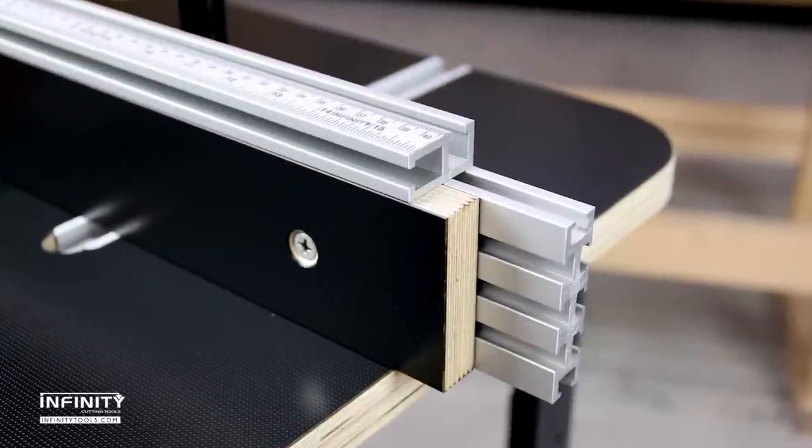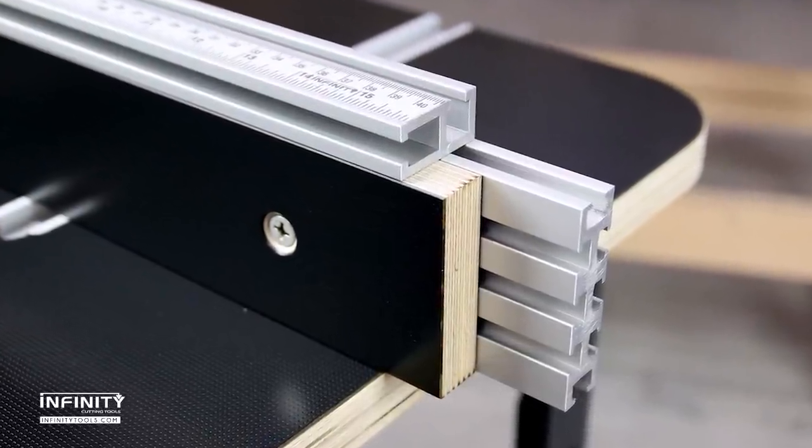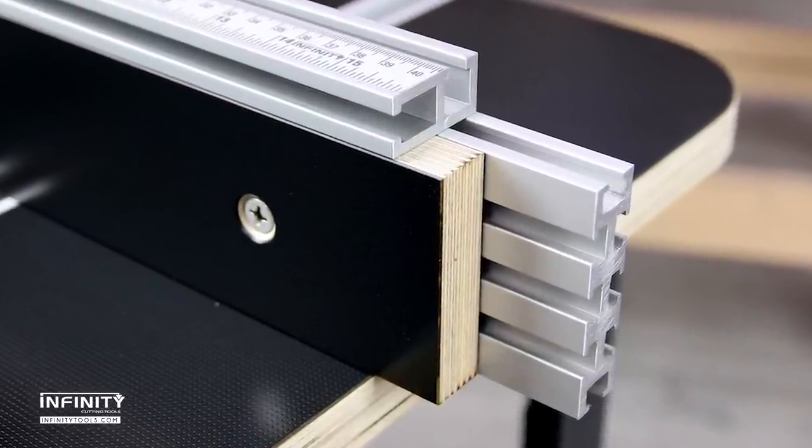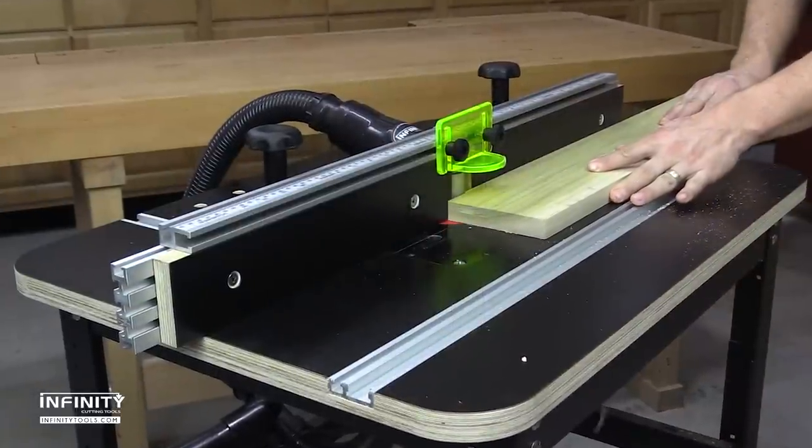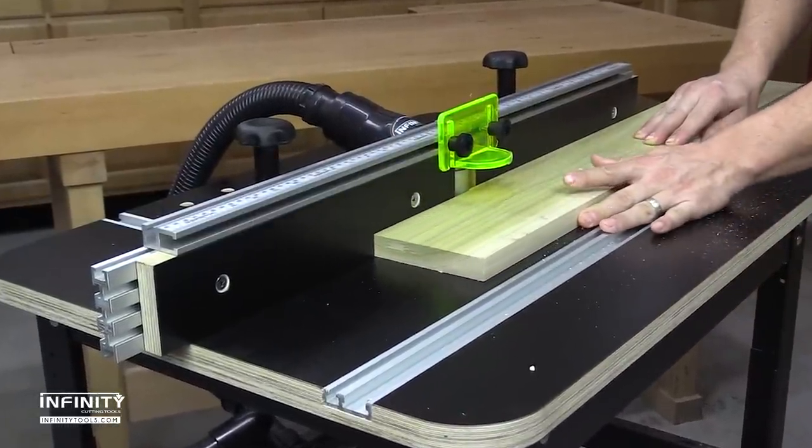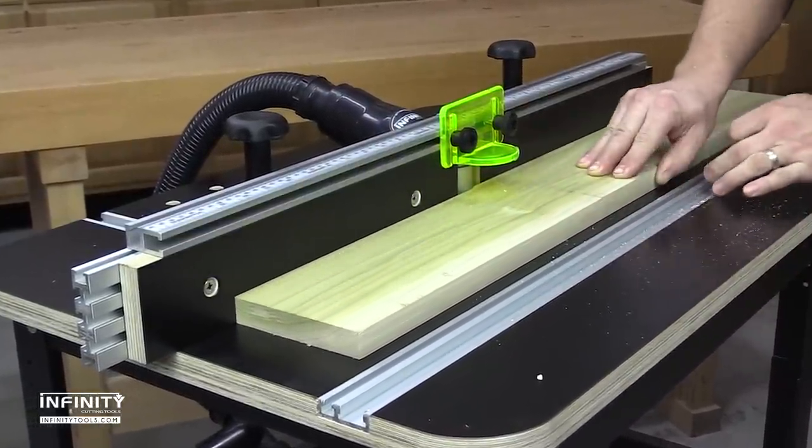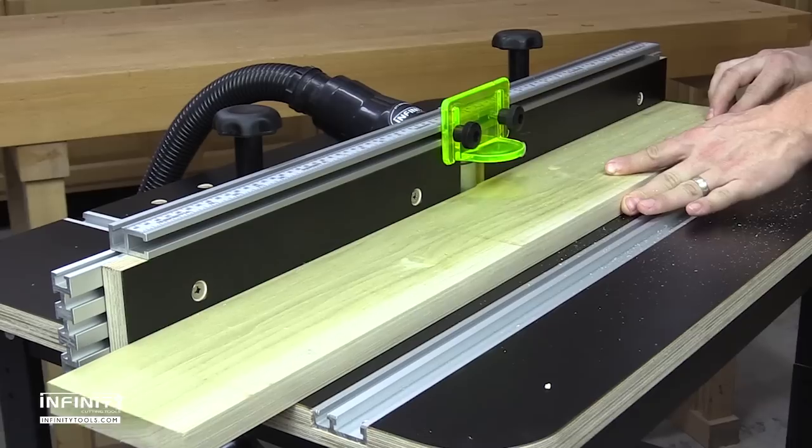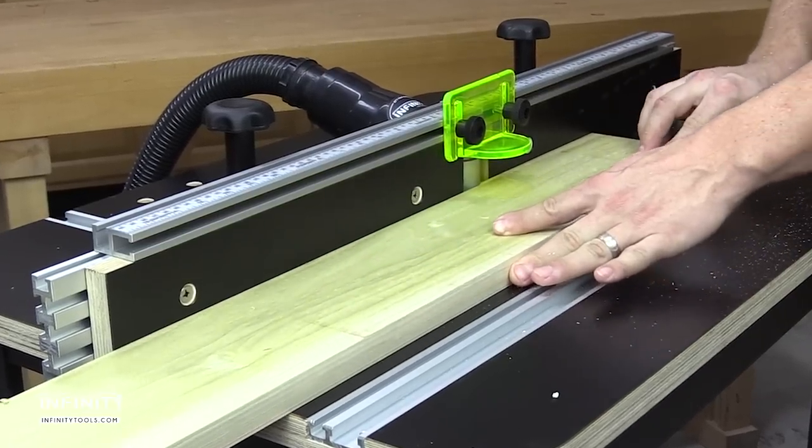Instead of inferior MDF, our fence includes 3/4-inch thick, micro-dot ply-core fence faces. The extra lubricity of the micro-dot faces allows your workpiece to glide effortlessly, and the flat and stable plywood core combine for years of trouble-free service.